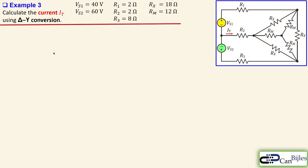Example 3 is a more practical circuit with two DC voltage sources VS1 and VS2, resistors R1, R2, and R3, and a combination of a delta and a Y connection. The delta has three equal resistors RX of 18 ohms — a balanced delta configuration — and the Y has three equal resistors RM of 12 ohms. We want to calculate the current IT, and we'll use the delta-to-Y conversion to simplify the calculation.